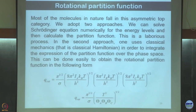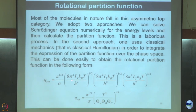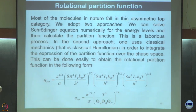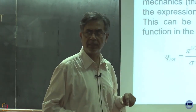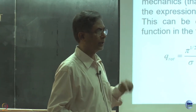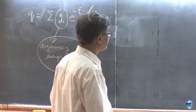For the asymmetric top, there is a symmetry number that takes care of the symmetry of the Hamiltonian — typically two or three — though the exact origin requires clarification. In terms of θ_r, this is the rotational partition function for the fully asymmetric case.